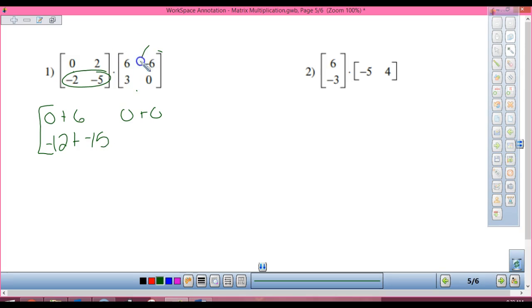Second row, second column? Twelve. Plus zero. It's really nice when there's zeros in there somewhere because it makes life a lot easier. So up here, top left? Six. Top right? Zero. Bottom left? Negative 27. And bottom right? Twelve. Good. There's another matrix.